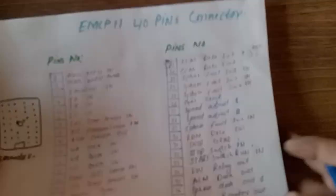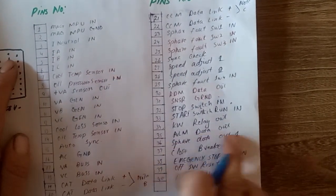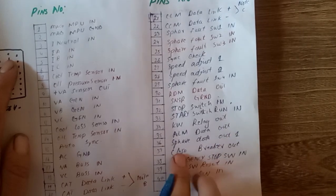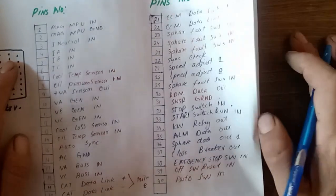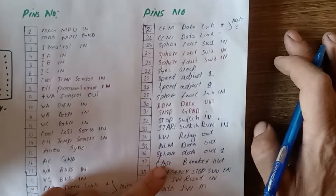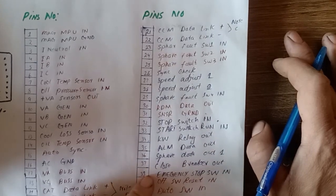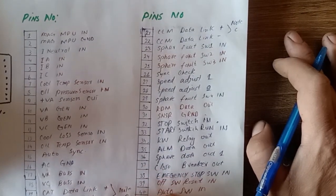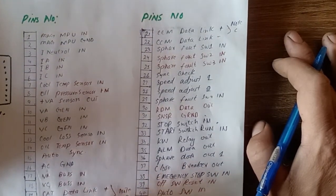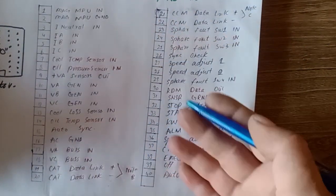Spare data out, close breaker out - you can close your generator breaker with this pin. Emergency stop switch IN, off/reset switch IN, and auto switch IN. This is the complete 40 pins detail - how to adjust the complete system and how to understand it.